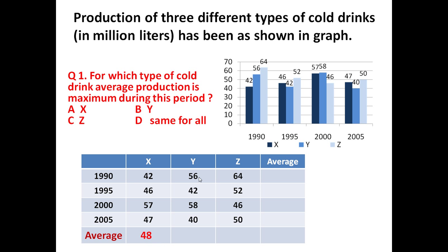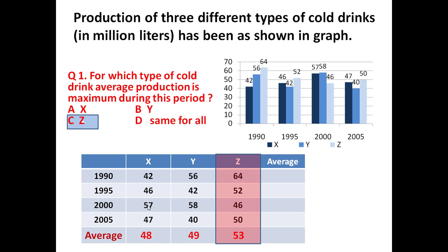So the average for X is 48. Similarly, you determine the average production of Y and Z, which come out to 49 and 53 respectively. For which type of cold drink is average production maximum during this period? Certainly it is Z. So the answer is C, Z.